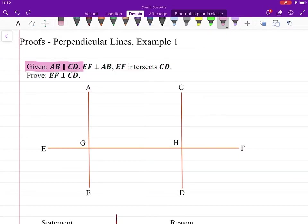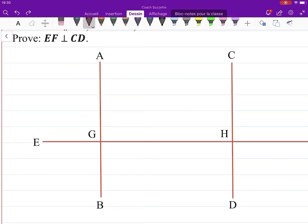Okay, so we're given that AB and CD are parallel. Mark up our diagram like this.